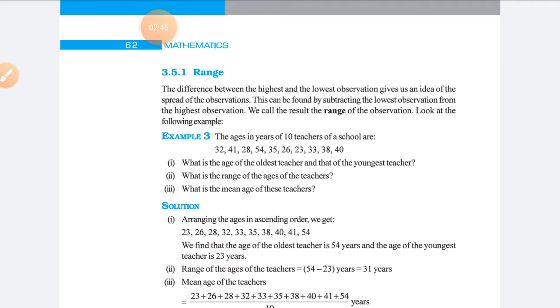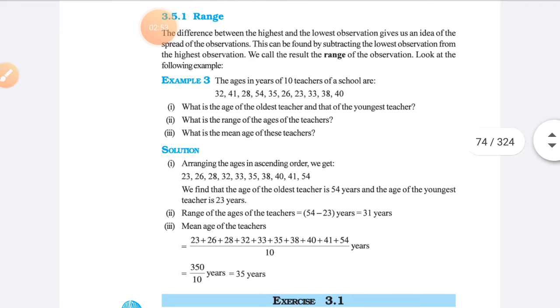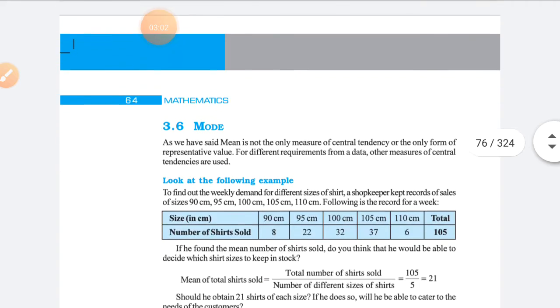Next, range. How to find out range? Range means subtraction of highest observation minus lowest observation.